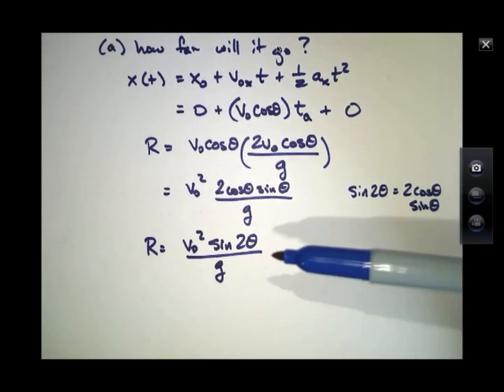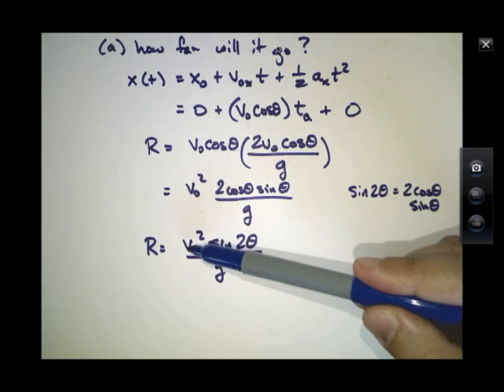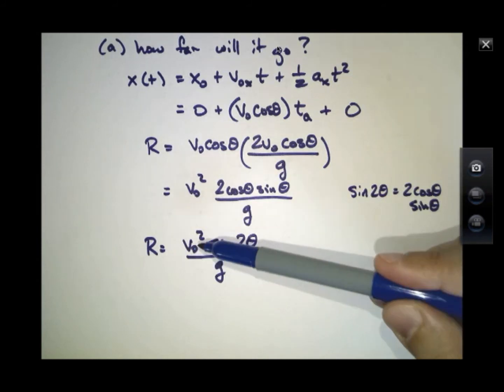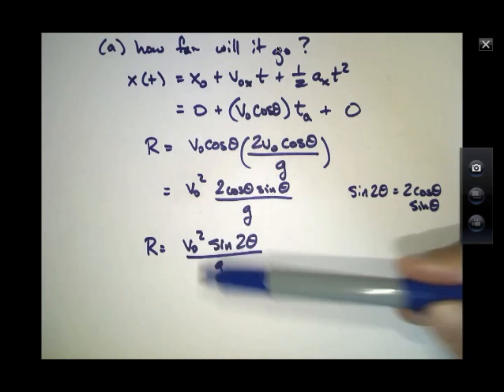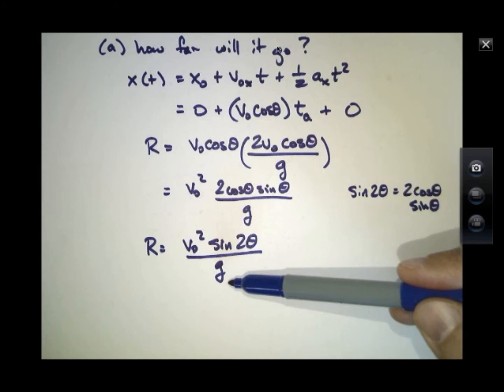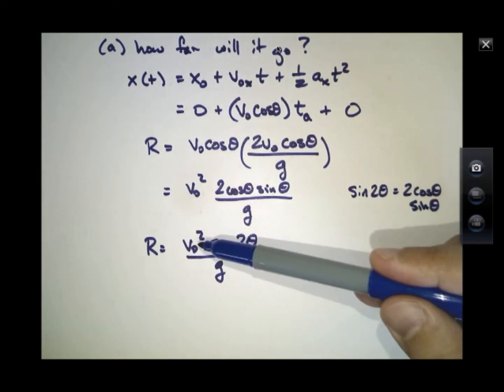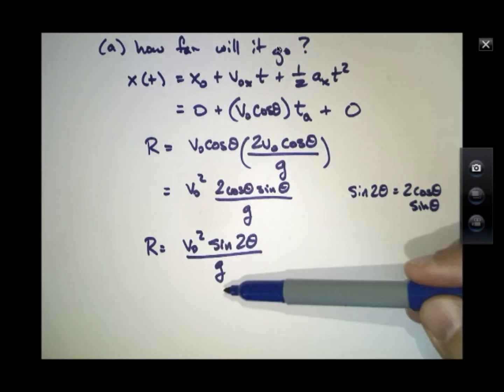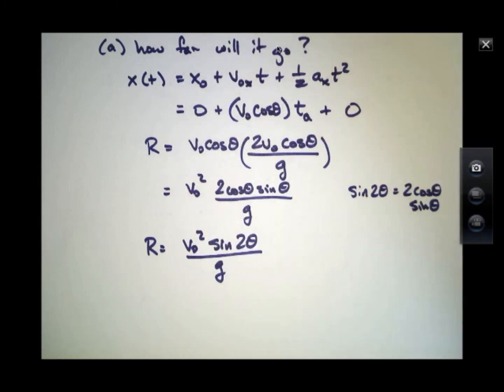It's worth just checking our units. This has units of meters, velocity has units of meters per second so this is meters squared per second squared. Acceleration has units of meters per second squared, so the per second squared down here cancels the per second squared up here in the numerator. And this has meters squared but this has meters, so one of the meters squared in the numerator gets canceled away. So this actually checks out in terms of units.